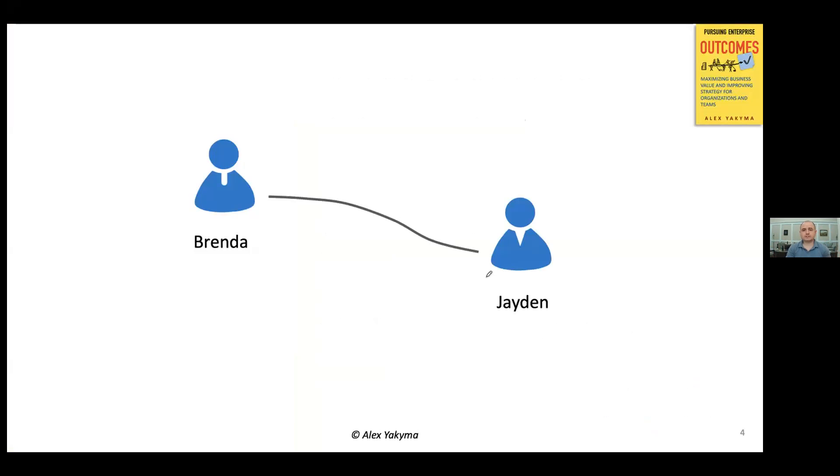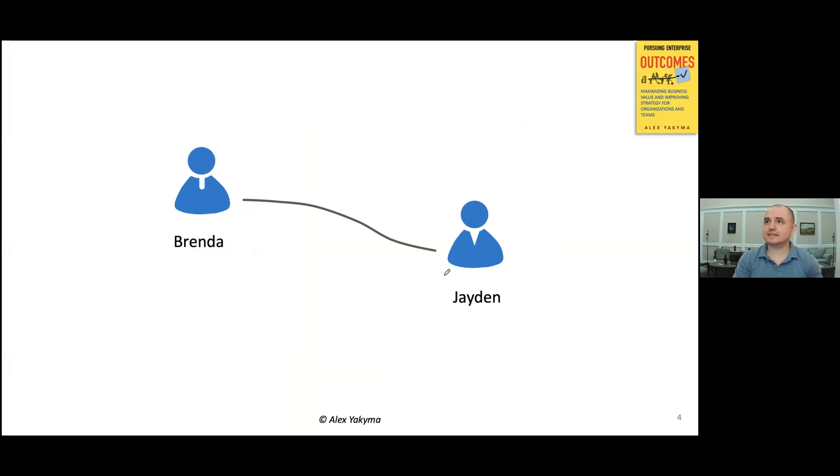But we'll start with a slightly different story that will reveal to us the intricacies of human systems and how value is created in such systems. So let's begin. We have two people, Brenda and Jaden, connected in some way.